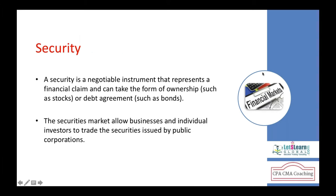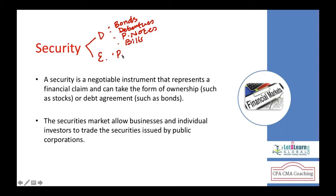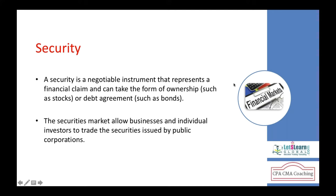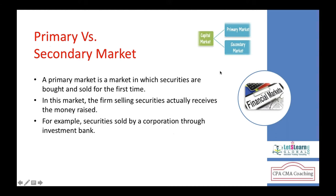Securities are of two types: debt securities and equity securities. Debt securities include bonds, debentures, and promissory notes like commercial paper and treasury bills. Equity securities include preference shares and common shares. This is the primary classification of securities. Most of these securities are negotiable, meaning they can be traded in the secondary market, and each has its own features.